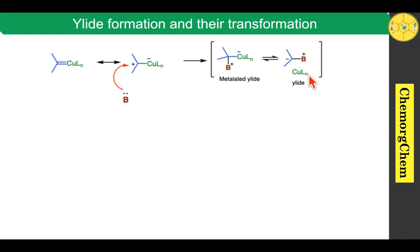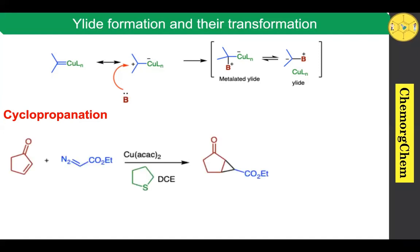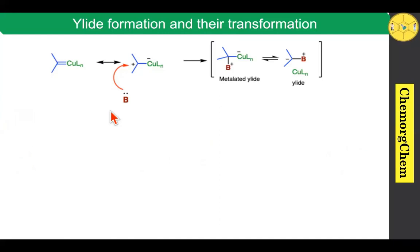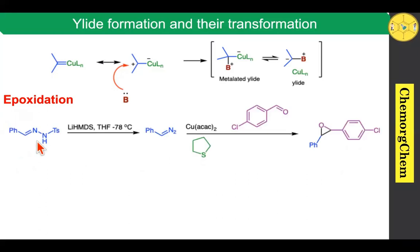After formation of the ylide, it can readily transform via various types of reactions. The first type is cyclopropanation: when you take the alkene and react with the diazo compound in the presence of copper acetylacetonate and tetrahydrothiophene, it readily produces a cyclopropane compound. Tetrahydrothiophene has a sulfur atom with a lone pair of electrons that readily reacts with the positive center, producing the corresponding sulfur ylide intermediate, which then reacts with the alkene to produce the cyclopropane compound.